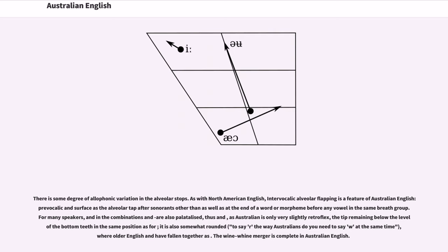For many speakers, /t/ and /d/ in the combinations /tj/ and /dj/ are also palatalized. Australian /r/ is only very slightly retroflex, the tip remaining below the level of the bottom teeth in the same position as for /ə/. It is also somewhat rounded: to say /r/ the way Australians do you need to say /w/ at the same time.